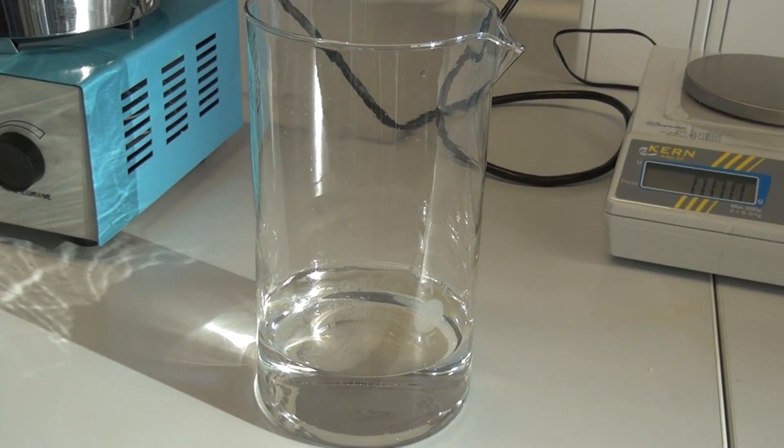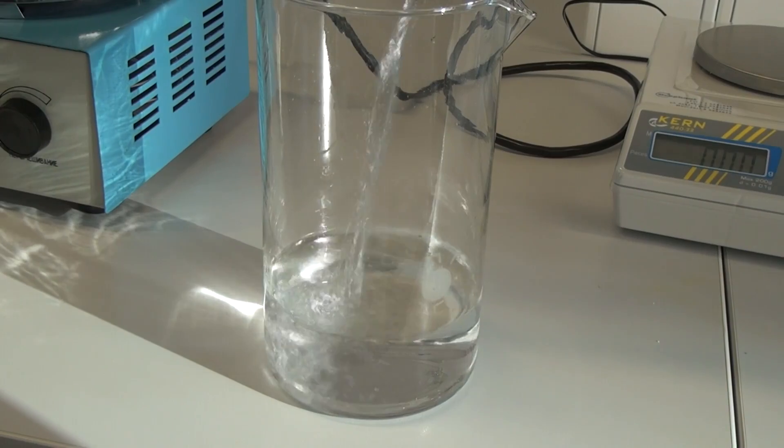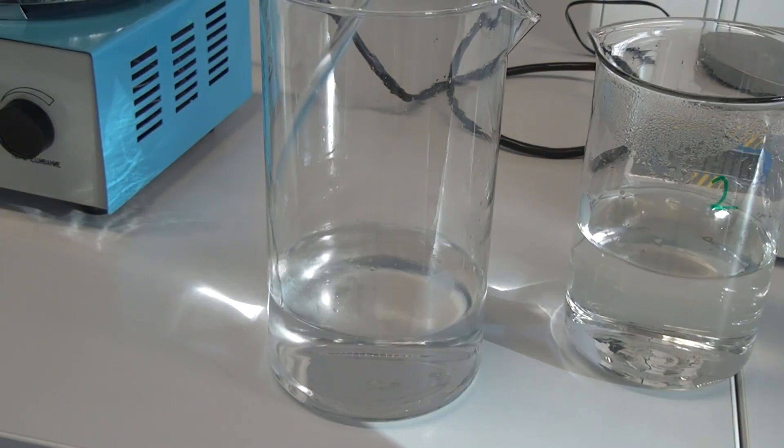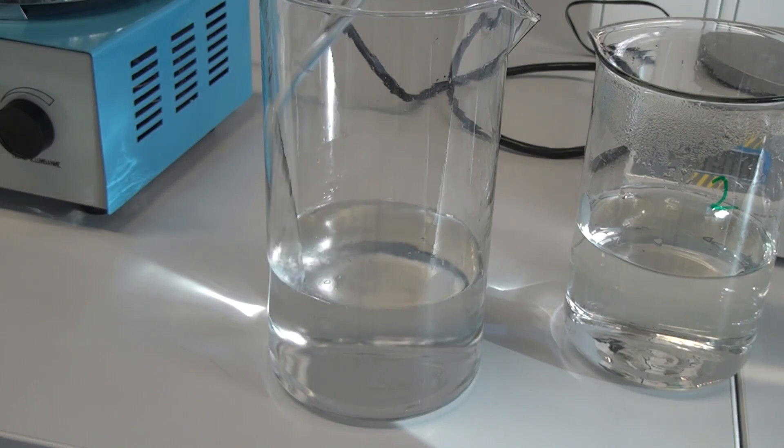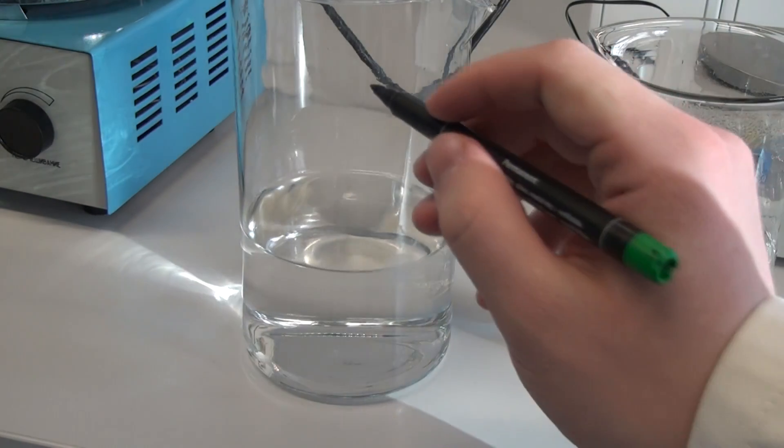After the starch is dissolved and we have a starch paste, pour it into the glass with our third solution. Next, bring the solution volume to one-third of a liter. Now we have all three solutions ready.